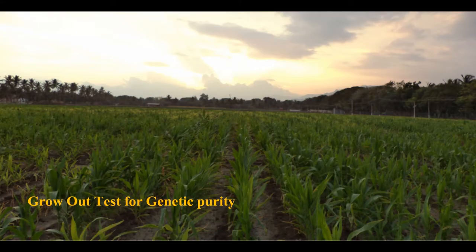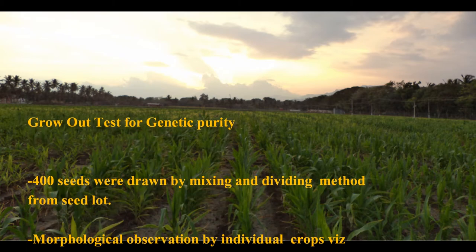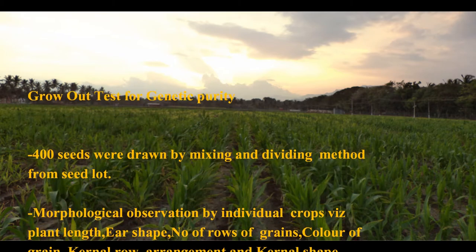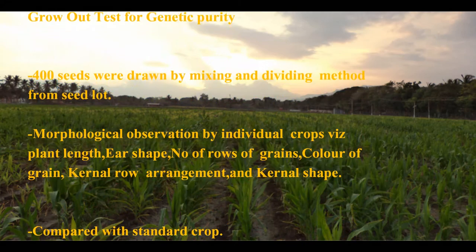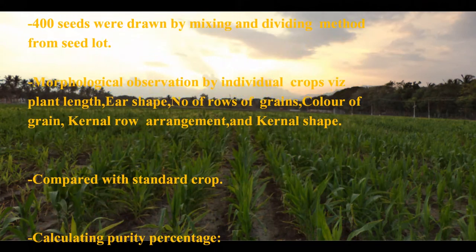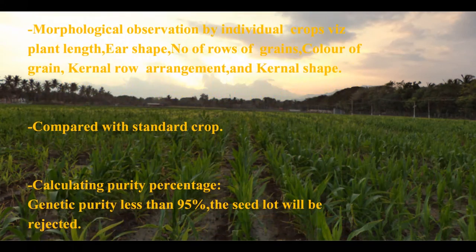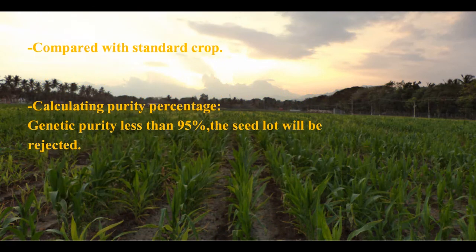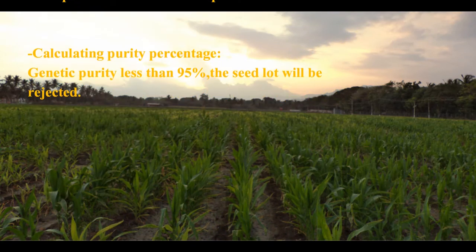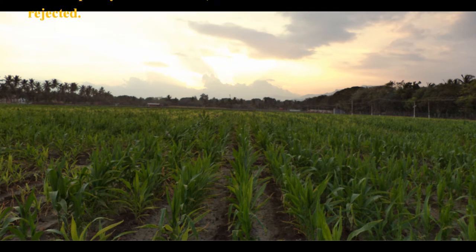Grow-out test for genetic purity. Forage seeds are drawn by mixing and dividing methods from the seed lot. Morphological observations of individual crops are made, including plant length, ear length, number of rows of grain, color of grain, kernel row arrangement, and kernel shape, then compared with standard crops. Genetic purity less than 95% results in the seed lot being rejected.